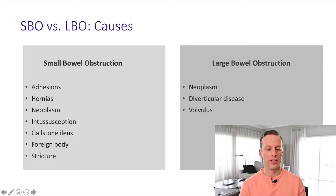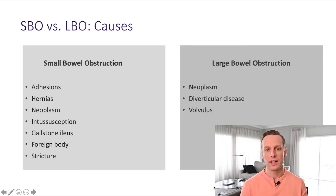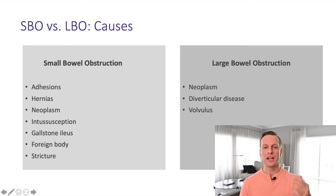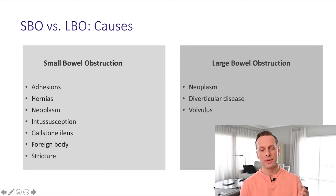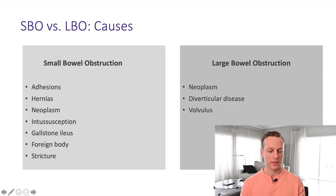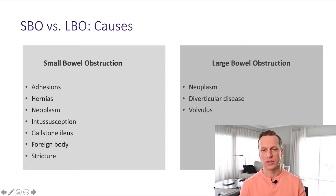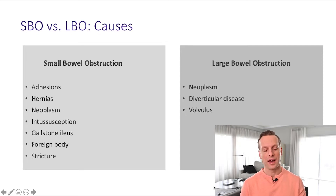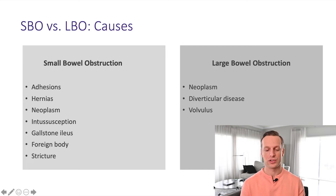Looking at small bowel obstruction causes, the number one cause in North America is adhesions from previous surgery. The next most common cause is a hernia, and the third most common cause is some form of neoplasm or cancer. Intussusception is a cause in children, and gallstone ileus is an uncommon cause in elderly populations, as well as foreign bodies and strictures.